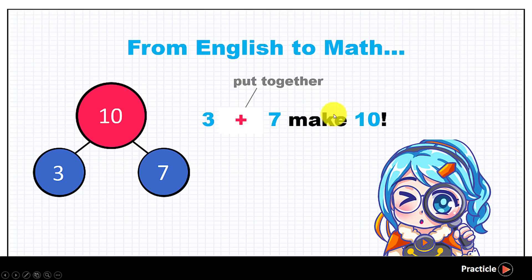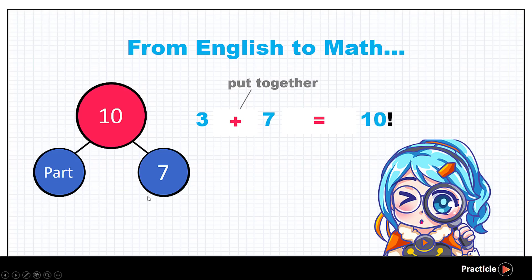Then what about the word make? We are going to turn this into an equal sign. See what we have now? We have magically turned 3 and 7 makes 10 into a math addition sentence. 3 plus 7 equals 10.